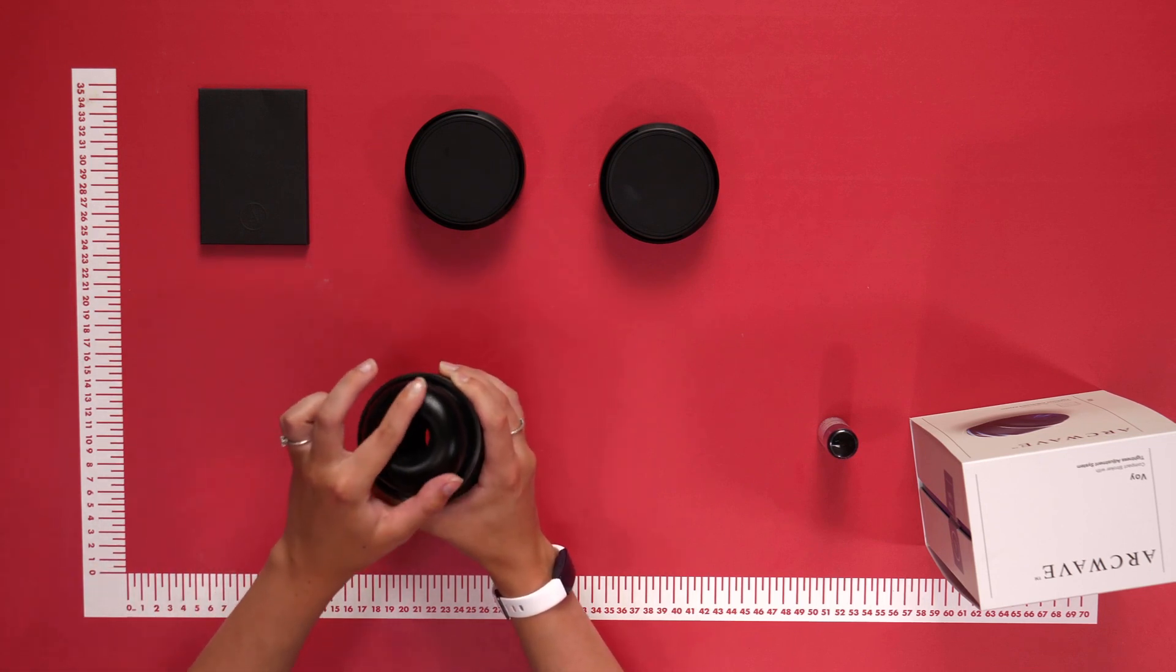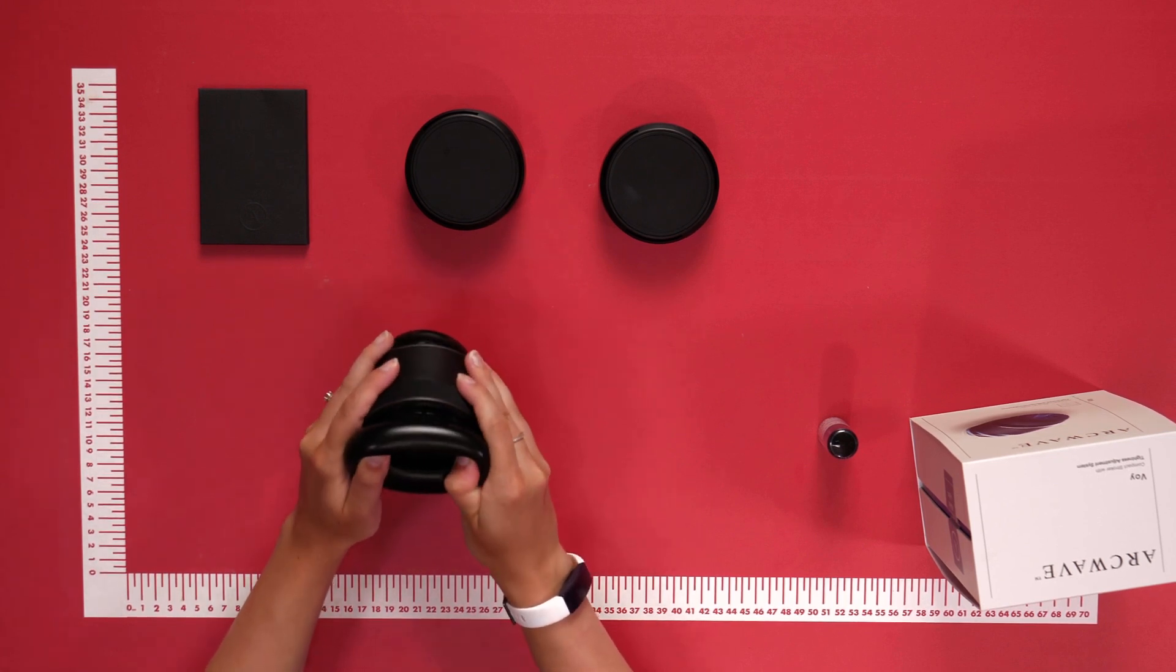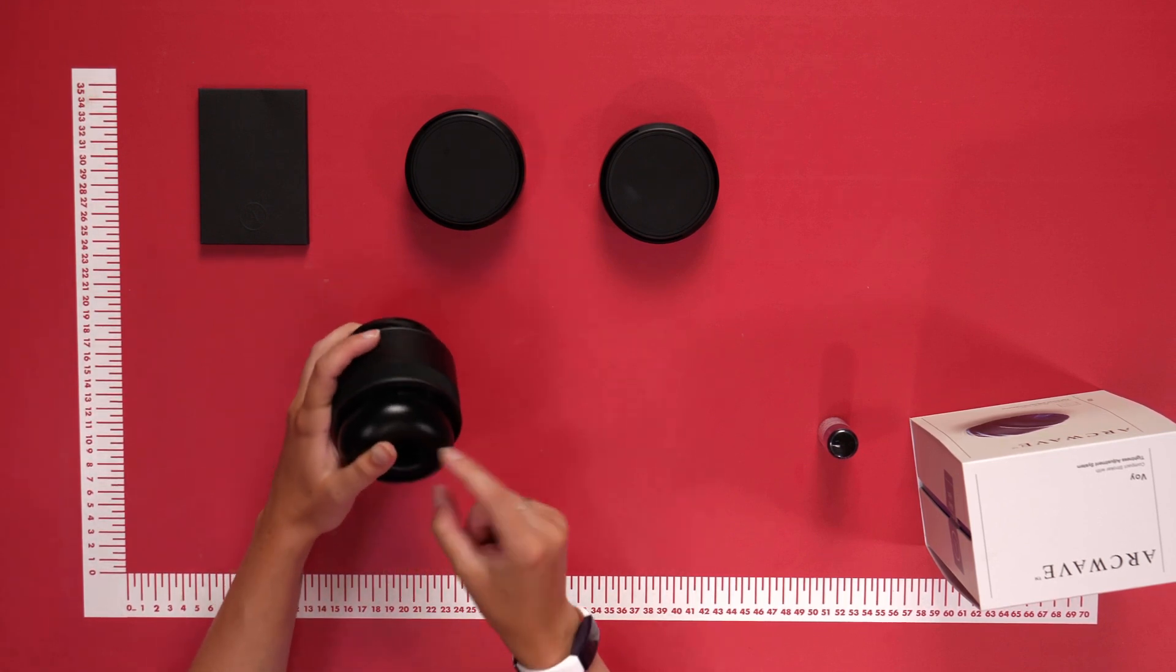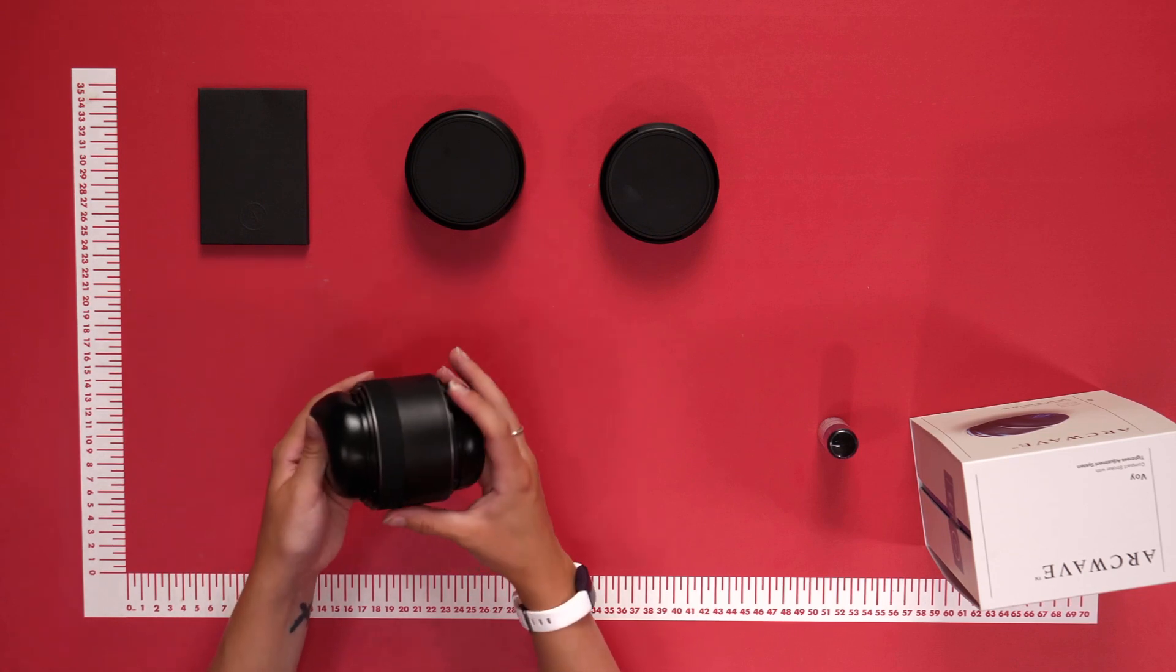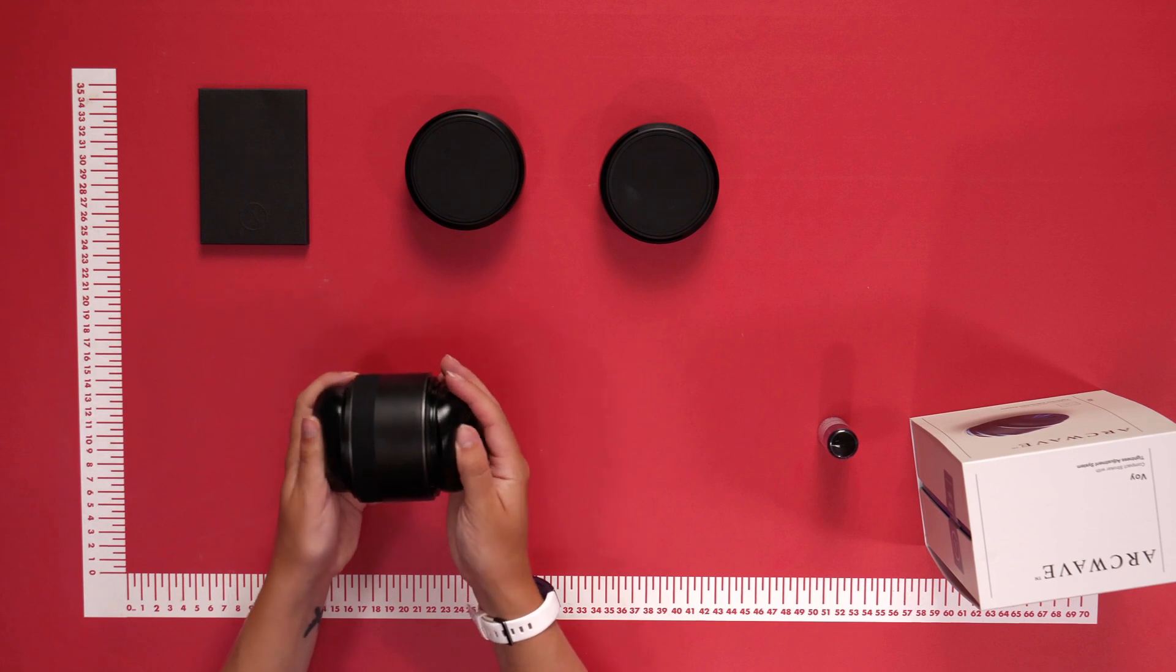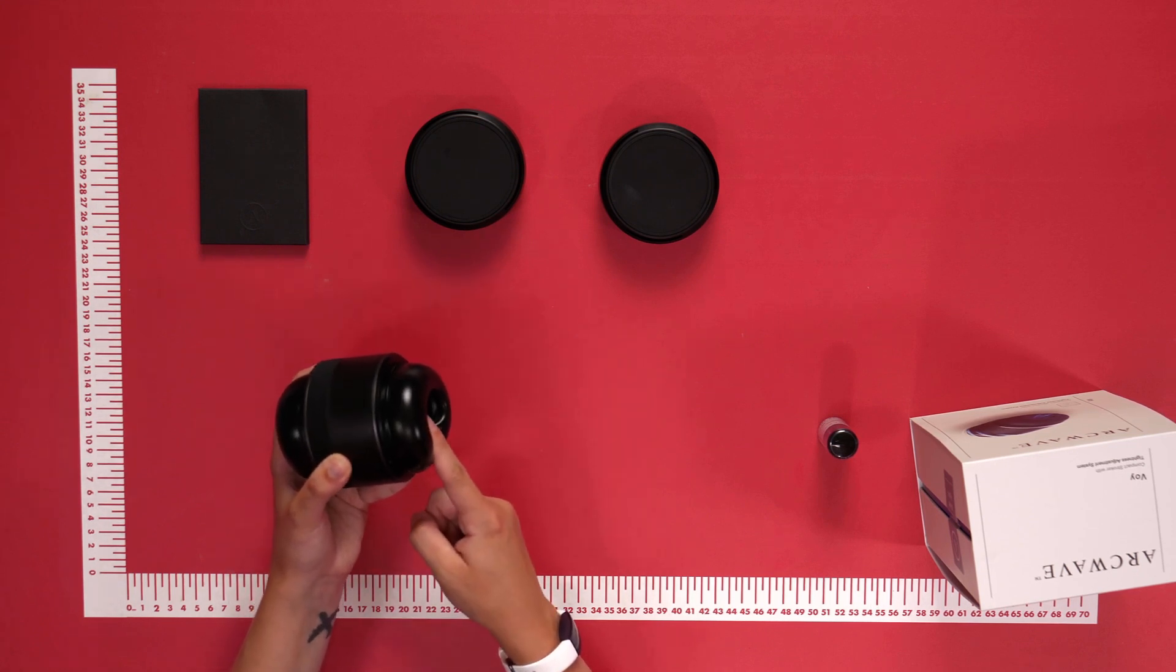The sleeve is made of ultra-soft CleanTech silicone for a comfortable feel. It's also very stretchy and features ribbing on the inside for extra stimulation. This means it's easy to clean, and the flexible material is very durable, hygienic, and suitable for all sizes.